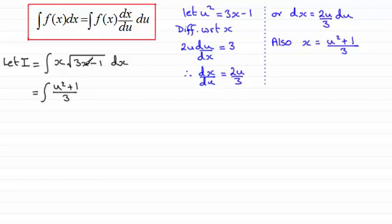And then in place of the root of 3x minus 1, then that's going to be the square root of u squared, which is just going to be u. And then we've got dx/du, which is going to be 2u over 3.